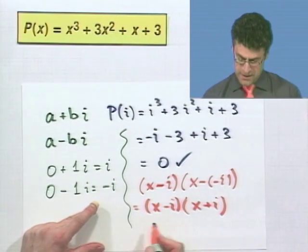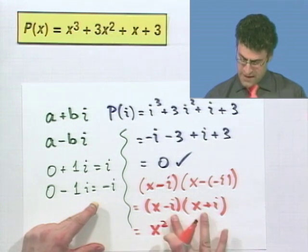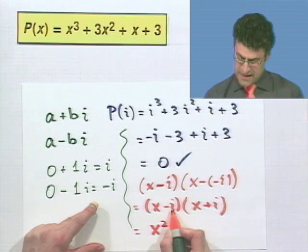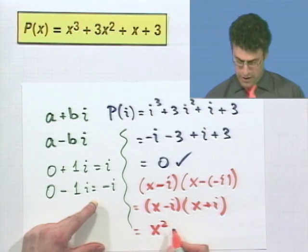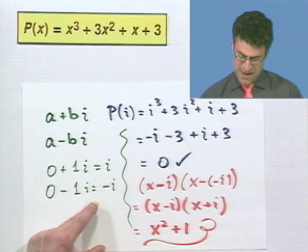And we could actually work through this a little bit. If we just foil this, I see x squared, and then the inner terms and the outer terms cancel. They add to give 0. And then I'm just left with negative i times i, which is negative i squared, which is negative negative 1, also known as plus 1. So we made an amazing discovery.